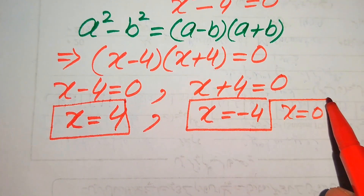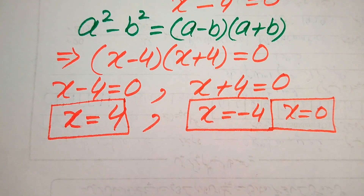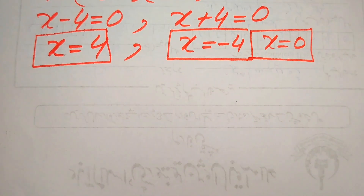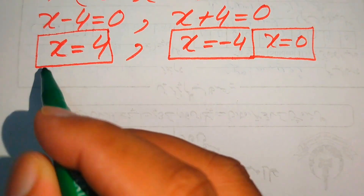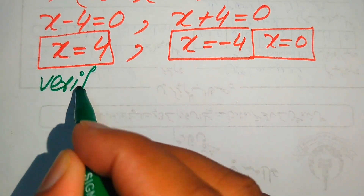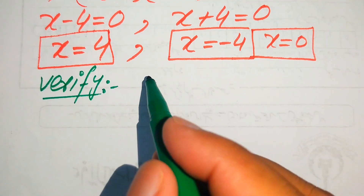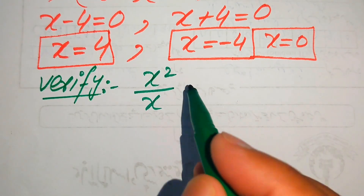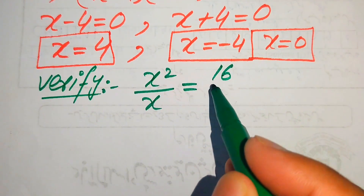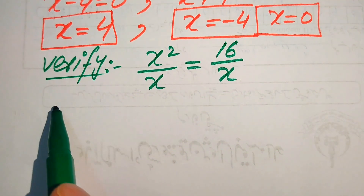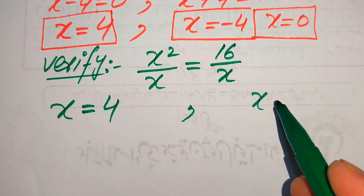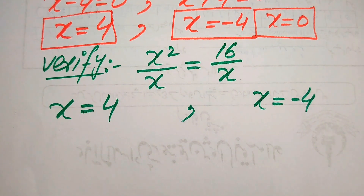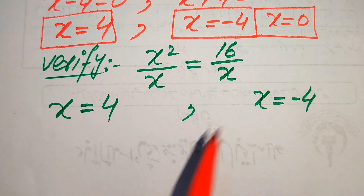We now have three roots: x equals 4, x equals minus 4, and x equals 0. We need to verify which of these are actual solutions and which are extraneous roots. For verification, we substitute each root back into the original equation: x squared over x equals 16 over x. We first verify x equals 4 and x equals minus 4, then check x equals 0.